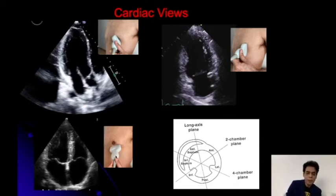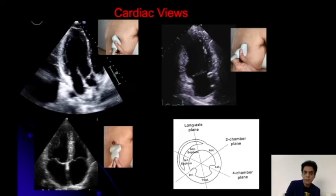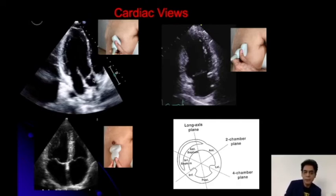From here, if you rotate the probe and make it 45 degrees, the probe is still lower down close to the nipple, and it is kept like this — again facing towards the right side — and now we are going to get this view. This view is referred to as the apical long axis view.